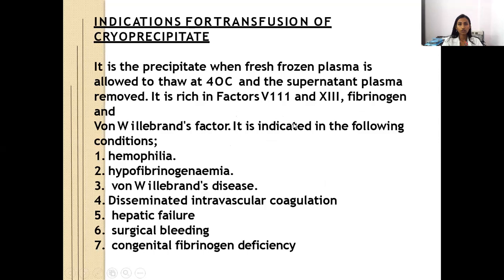Cryoprecipitate is a precipitate formed when fresh frozen plasma is allowed to thaw at 4 degrees Celsius and the supernatant plasma is removed. It is rich in factor VIII and von Willebrand factor. Indicated in hemophilia, von Willebrand's disease, disseminated intravascular coagulation, hepatic failure, surgical bleeding, and congenital fibrinogen deficiency.